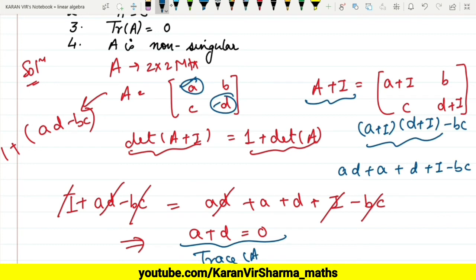This is a + d, their sum is 0. That is the trace of A. Why? Because this is the sum of diagonals. So that is 0.